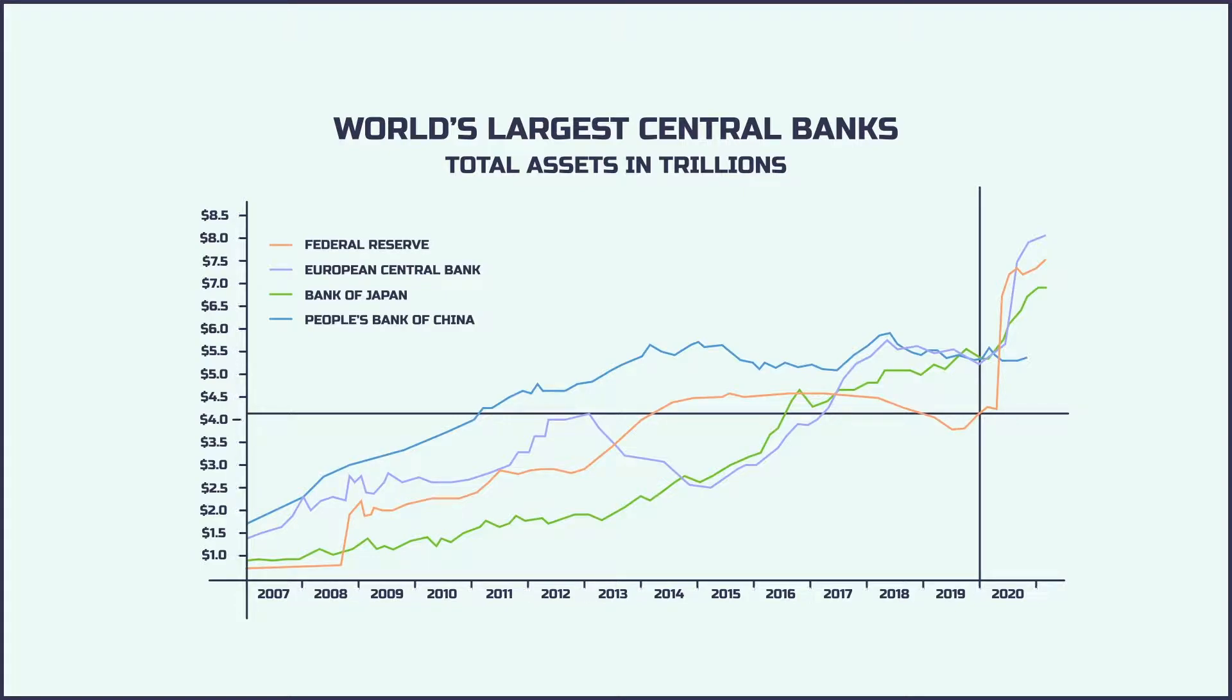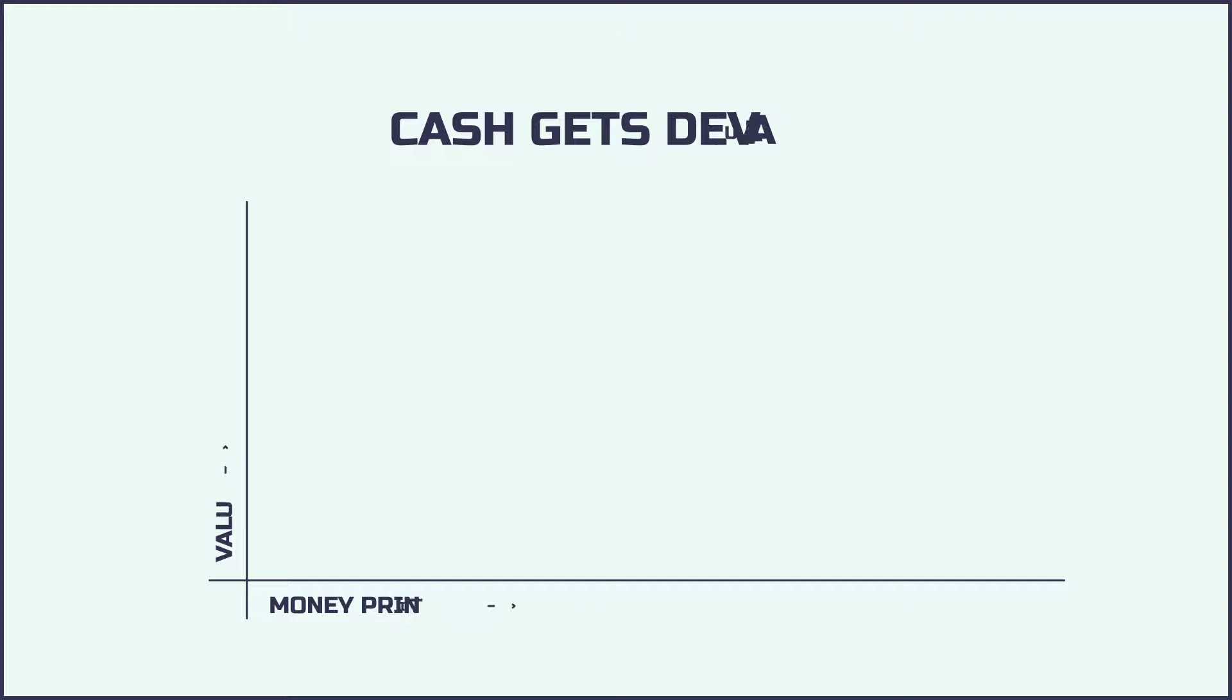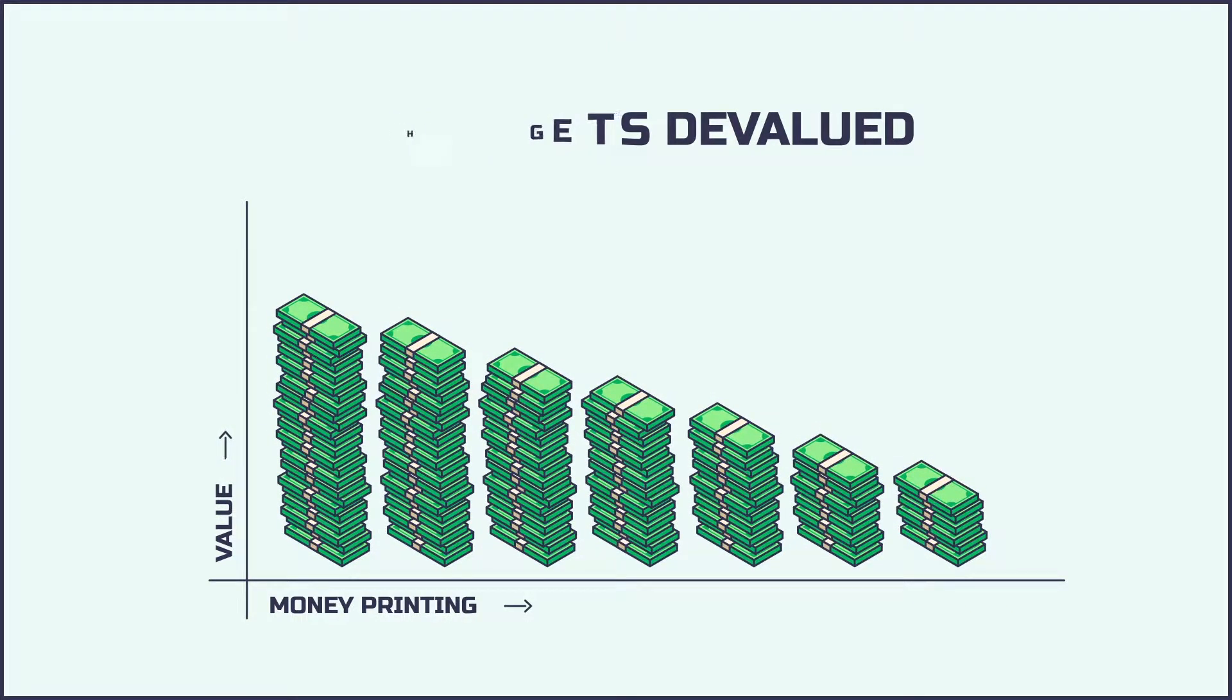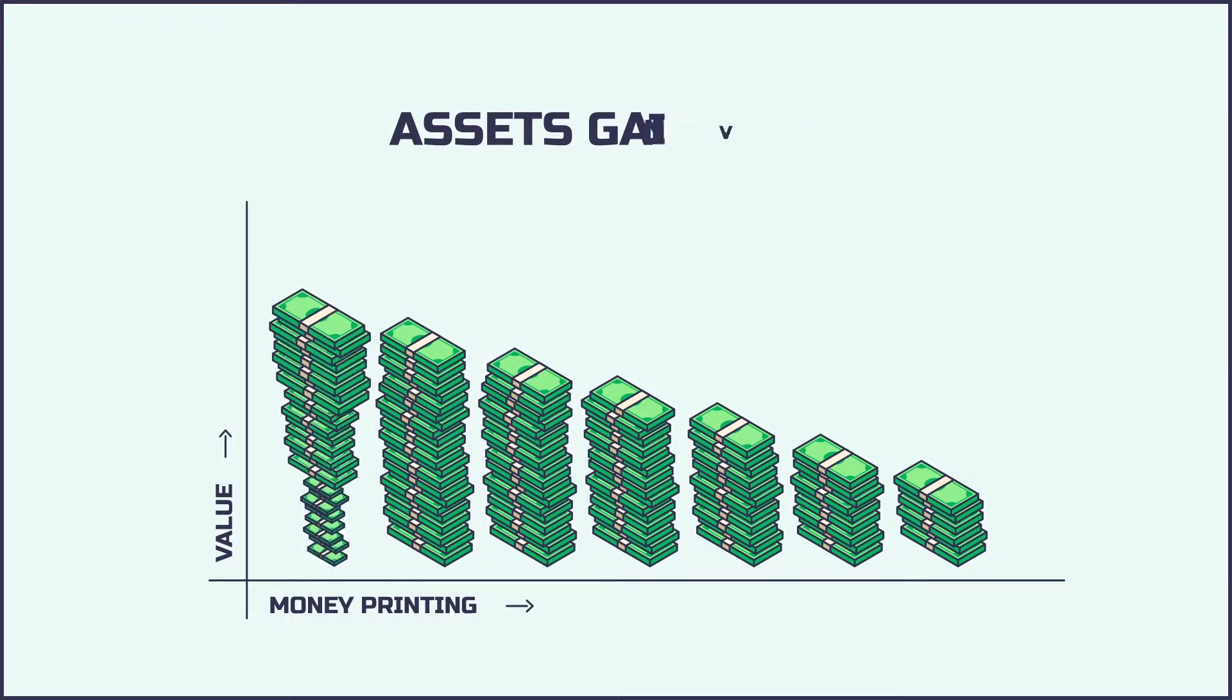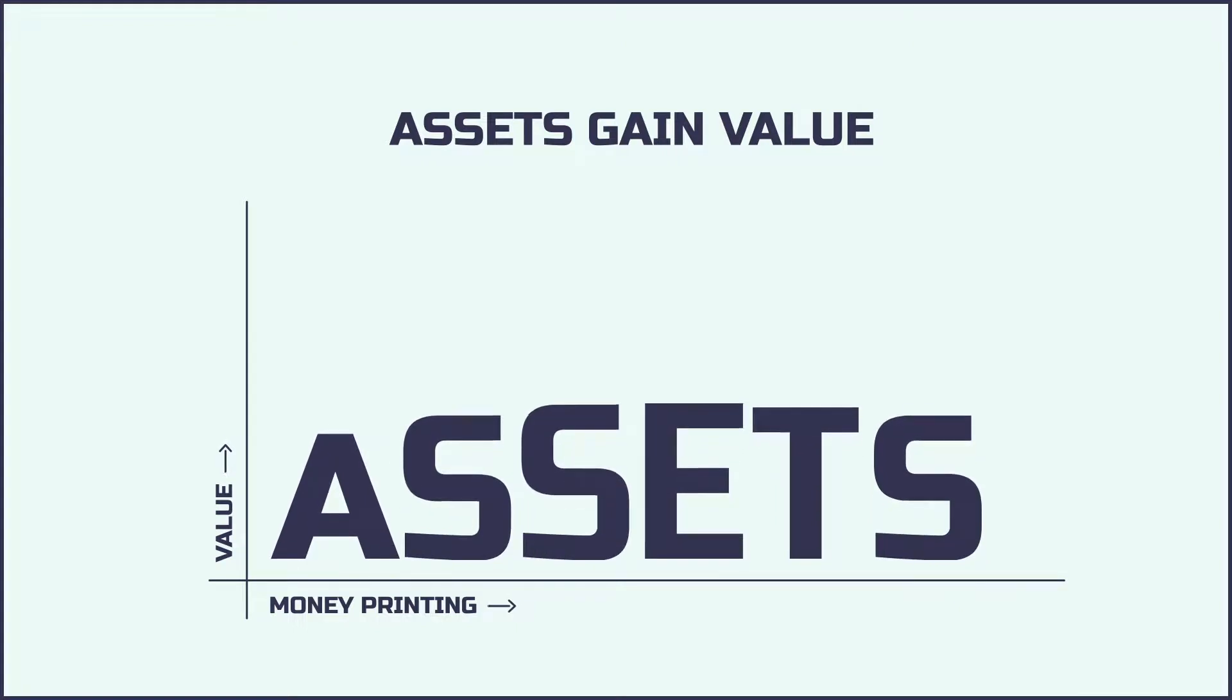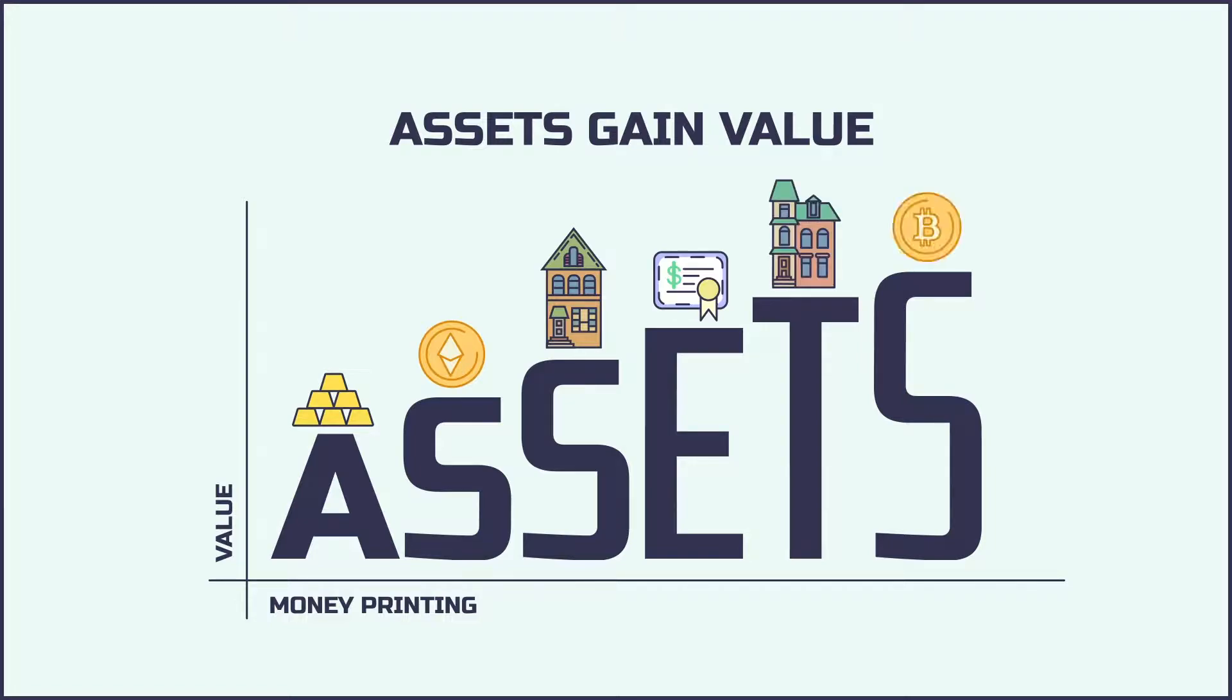One thing printing money would affect is cash. As the government prints, cash gets devalued. Where could we park this cash so it doesn't lose value? I'm sure you guessed it. Assets. The value of assets would soar. This is great. Everyone can become rich as long as they have assets. What's happening here has a name. It's called the Cantillon Effect.